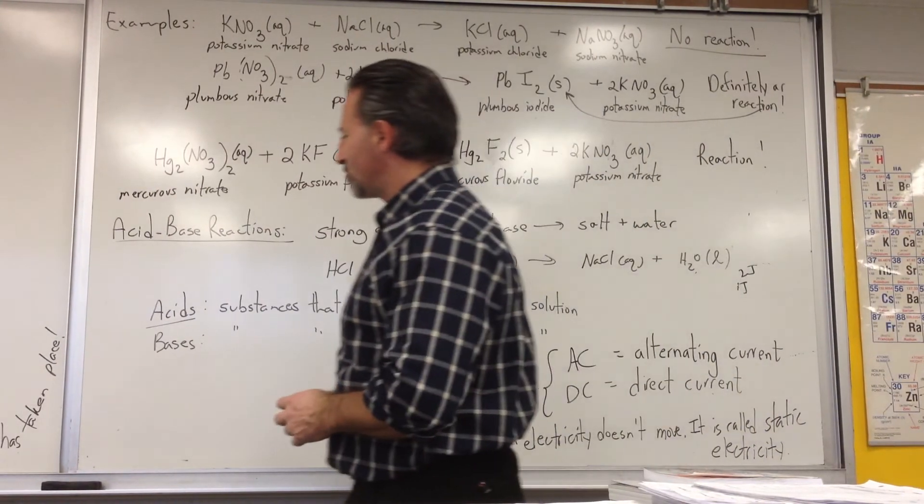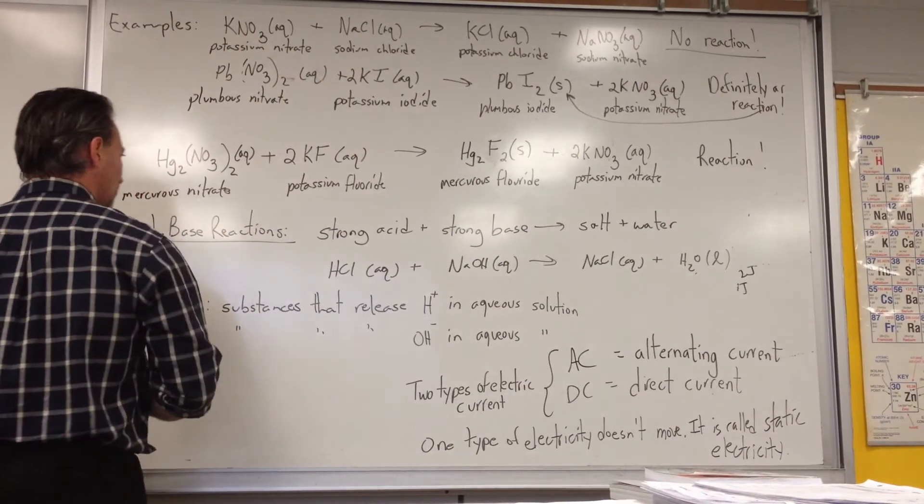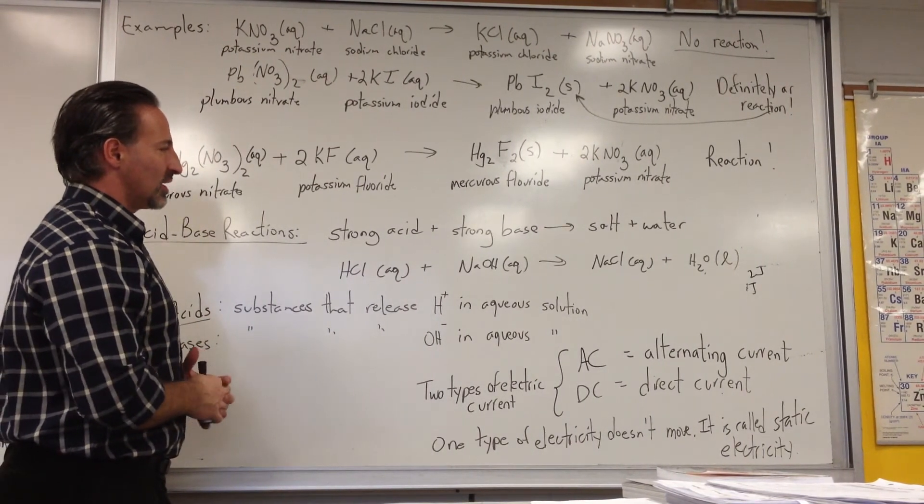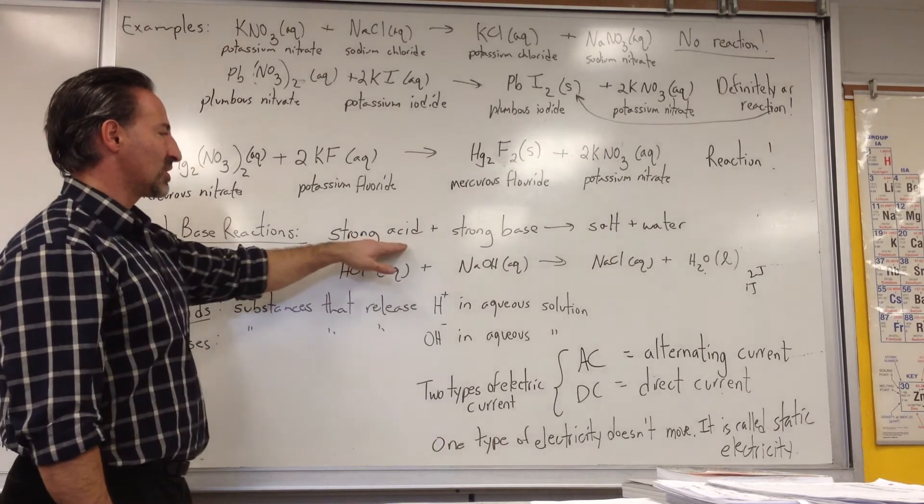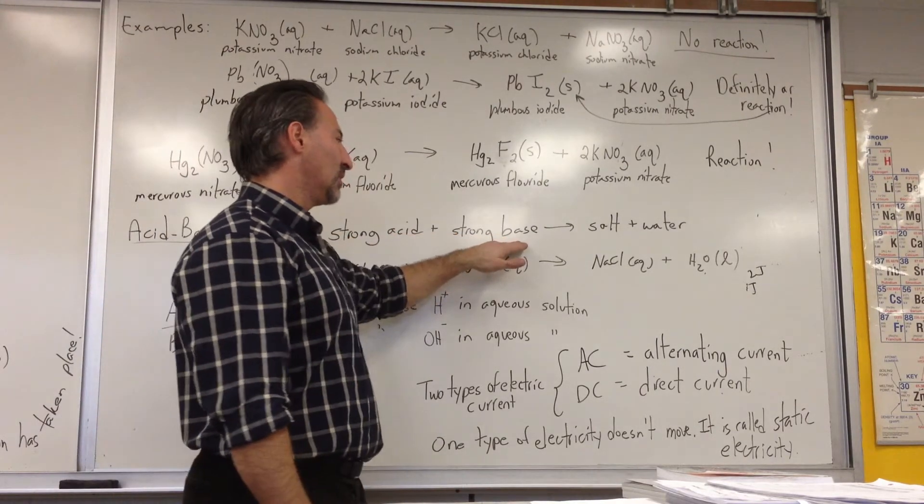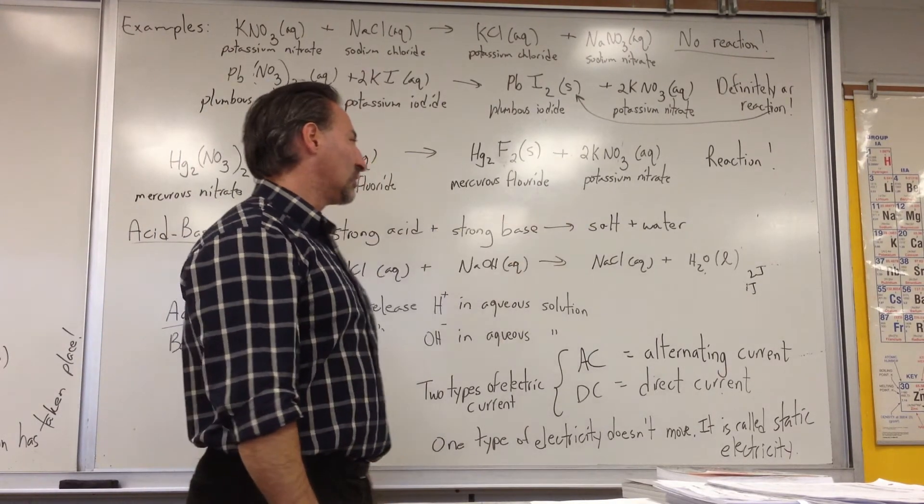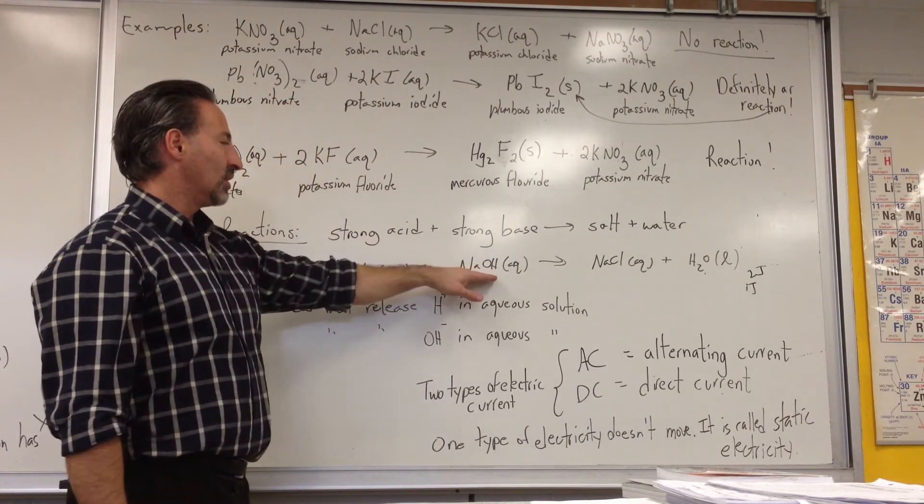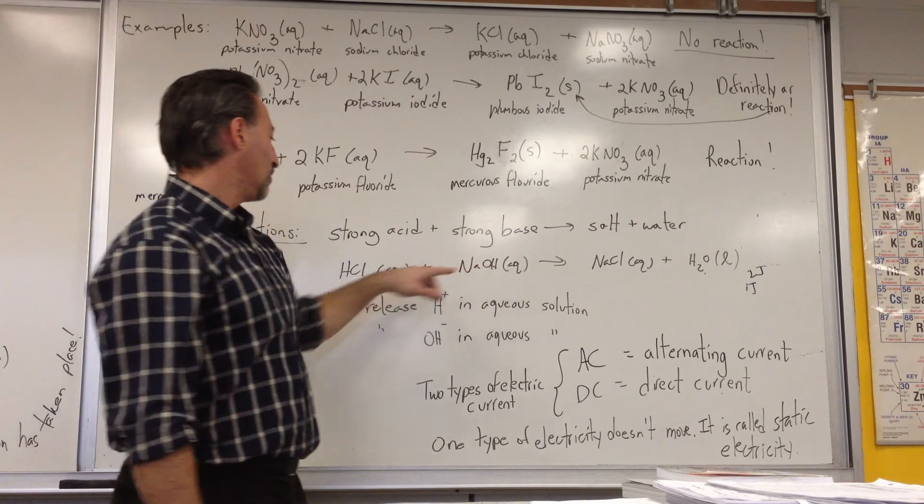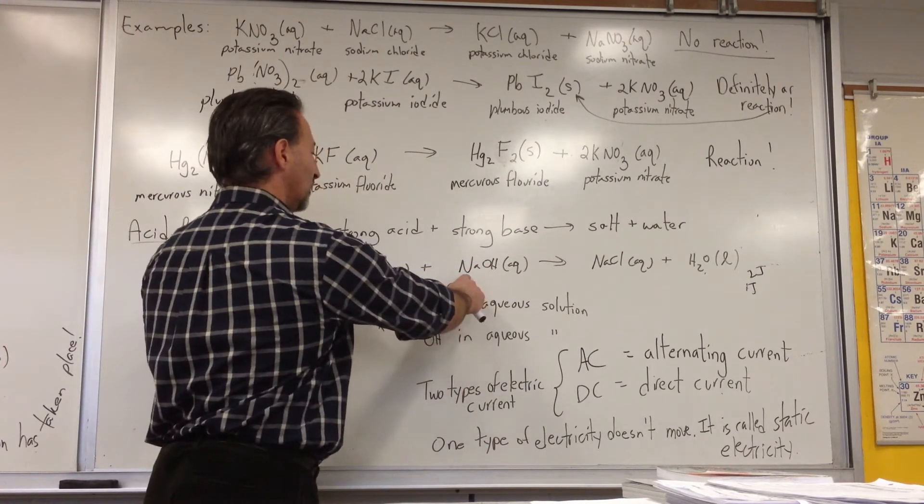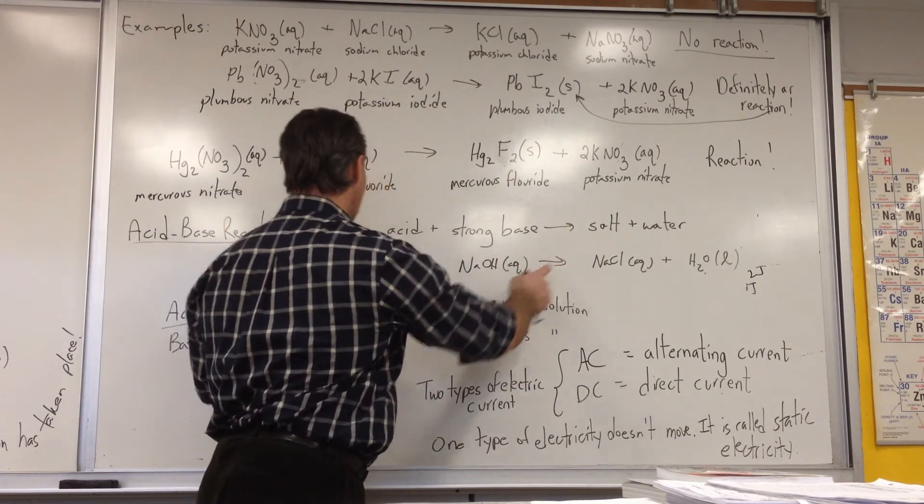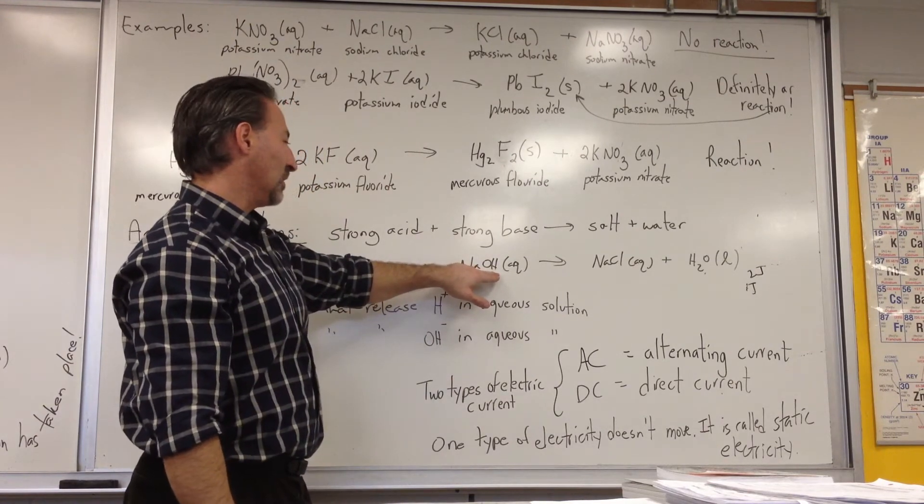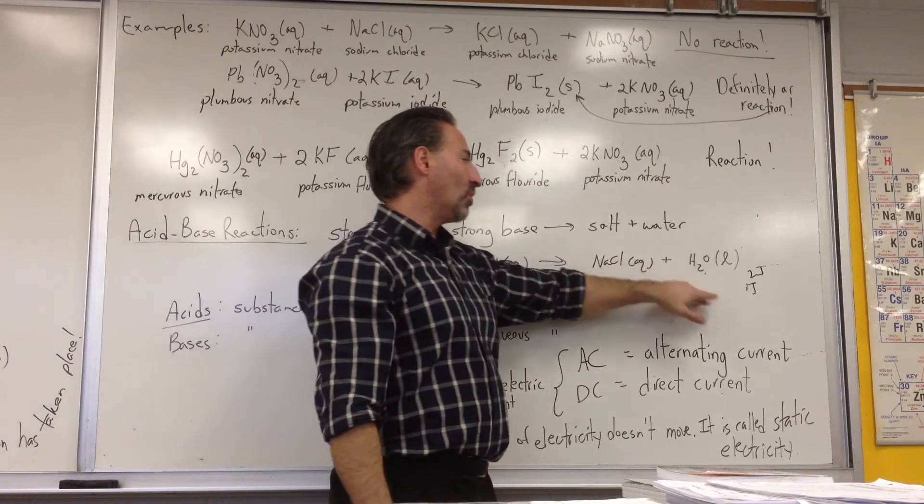The other type of reaction you should be aware of is acid-base reaction. Typically, the example you would want to use, the easiest example to remember is when you mix a strong acid with a strong base. The result is you get salt and water. So if you mix hydrochloric acid and sodium hydroxide, you'll get sodium and chlorine combined to form sodium chloride. And the H-plus from the acid and the OH-minus, the hydroxide from the base, will combine to form water.